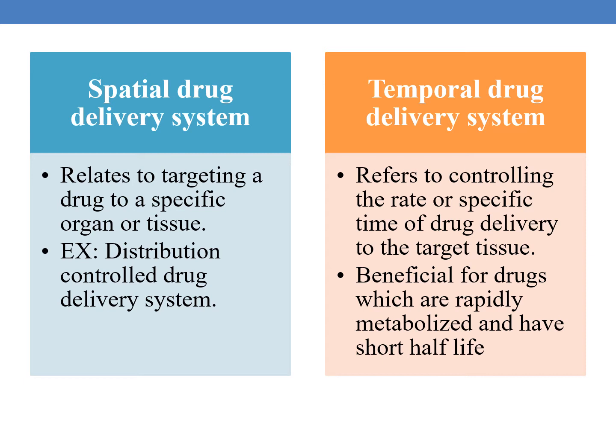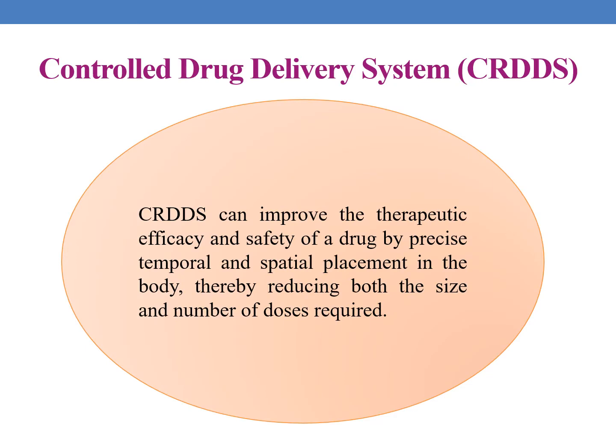The next type is temporal drug delivery system. As the name indicates, it relates to controlling the rate or specificity of time — referring to controlling the rate or specific time of drug delivery to target tissues. Temporal drug delivery system is beneficial for drugs which are rapidly metabolized and have shorter half-lives. CRDDS, controlled release drug delivery system, can improve therapeutic efficacy and safety of a drug by precise temporal and spatial placement in the body, thereby reducing both the size and frequency of doses required.